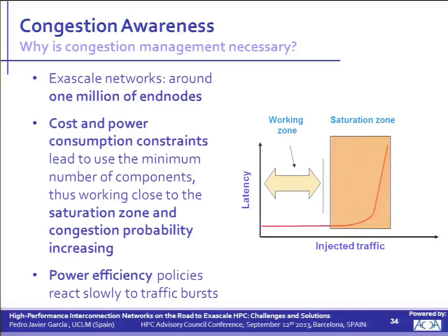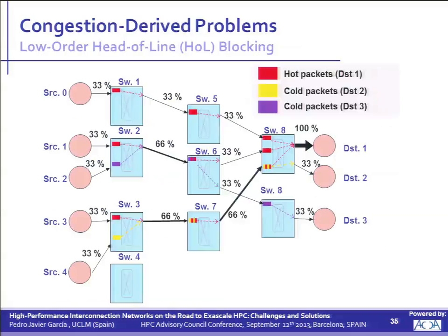Even with an interesting proposal in that direction, the problem of slow reaction to traffic bursts would still be there. It is likely that this approach is right if we provide the system with a suitable congestion management mechanism — so that when traffic bursts or intense traffic appear in the network, we can apply some type of congestion management. Note that for Exascale systems, cost and power consumption constraints will be very high, so we cannot over-dimension the network. We will be working very close to the saturation zone, making congestion very likely in the form of bursts, hot spots, and so on. Congestion management mechanisms will be required.